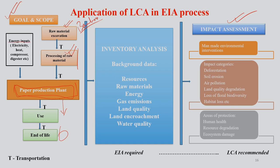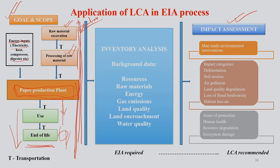Definitely we need energy in different forms and various other inputs to arrive at this ultimate product, then use it and then finish — that is the entire life cycle. This is your goal and scope. Once this product utilization takes place and the end of life of the product — here the paper — if you go for the EIA of this particular product development process, we find that impact assessment gives you man-made environmental interventions taking place. The impact of this product development process can be divided into various categories: deforestation of bamboo, soil erosion because of removing bamboo from the system, air pollution from the industry and the plant, land quality degradation, loss of floral diversity, and habitat loss.